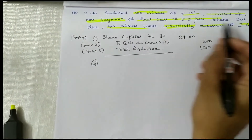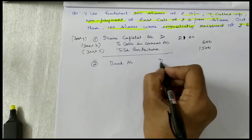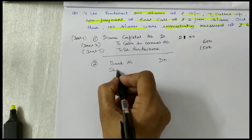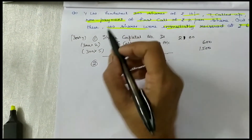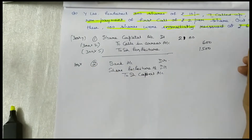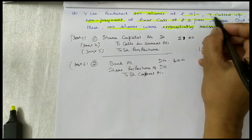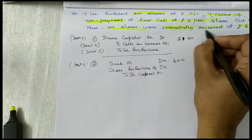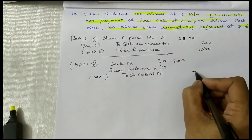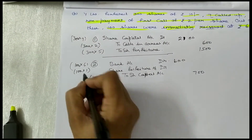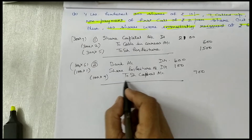Shares were reissued at Rs.6 per share. Bank account debited, share forfeiture account debited, to share capital. The 100 shares were reissued, so 100 into 6 is Rs.600. Rs.7 has been called up and immediately reissued, so paid up capital is also the same. 100 into 7 is Rs.700, and 100 into 1 is the amount of discount at the time of reissue. Narration: reissue of 100 shares for Rs.600.